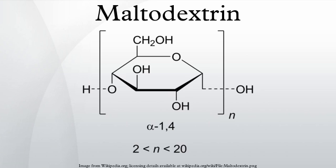Maltodextrin consists of D-glucose units connected in chains of variable length. The glucose units are primarily linked with α(1→4) glycosidic bonds. Maltodextrin is typically composed of a mixture of chains that vary from 3 to 17 glucose units long.